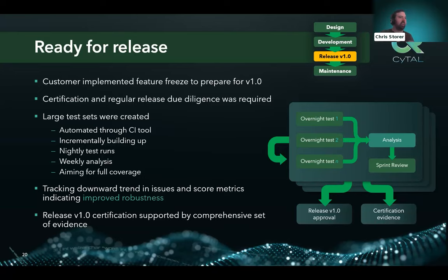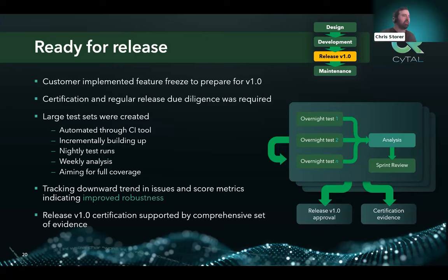At some point they needed to move toward release, so they did a feature freeze followed by maintenance sprint cycles to fix bugs and optimize stability, working toward version one. They also had a certification requirement. They used a similar strategy to their development sprints but with a much more comprehensive generator configuration — aiming for wide coverage of the protocol — and running much larger batches of tests nightly, then analyzing weekly. Proto-crawler's metrics showed robustness and stability improving over time, giving confidence the product was sufficiently robust and secure, and providing bottled evidence for their certification authority.